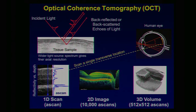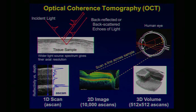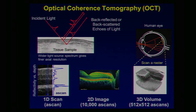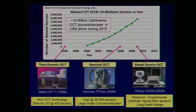Scanning that spot across the retina gives a two-dimensional image consisting of 10,000 A scans. You can then do a raster scan and get a 3D volume. The ophthalmic market for OCT is quite large — estimated at about 16 million ophthalmic procedures in 2010 in the USA alone.